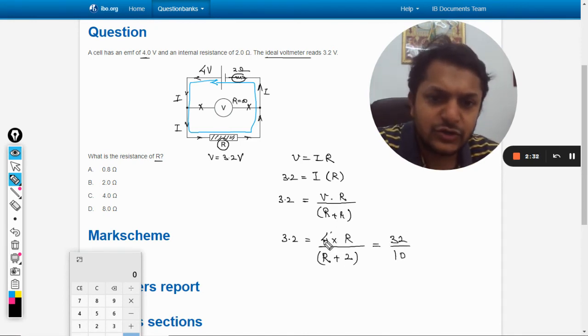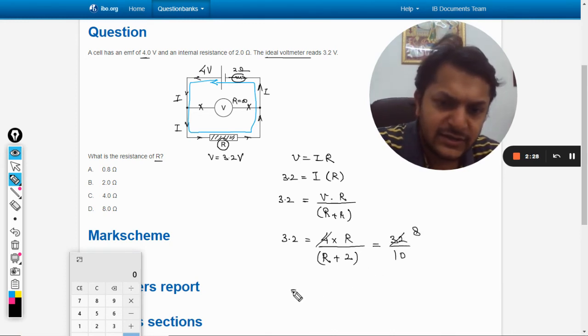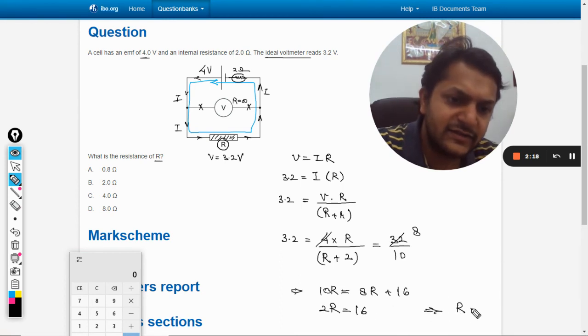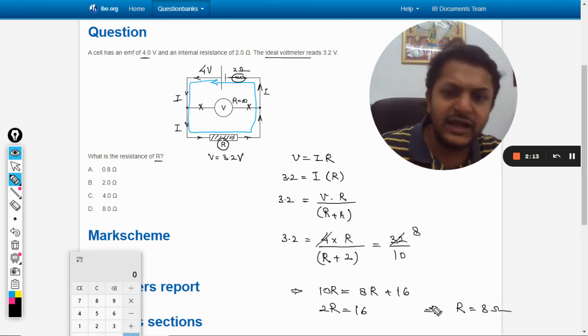On cross multiplying, we get 10R equals 8R plus 16. So 2R equals 16, and this implies R equals 16 by 2, that is 8 ohms.